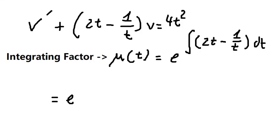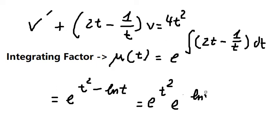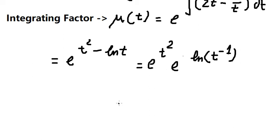The integral of 2t — we know the integral of t gives t squared over 2, so the integral of 2t gives t squared. For the integral of 1 over t with the negative sign, we get negative ln(t). So we put e to the power of t squared, and e to the power of negative ln(t). That negative ln(t) simplifies, giving us t to the power of negative 1, which we can write as 1 over t.